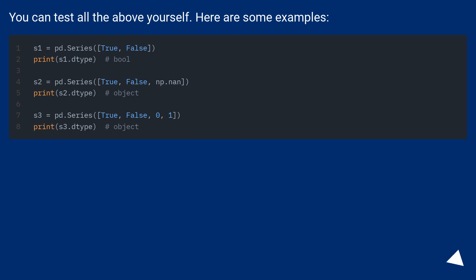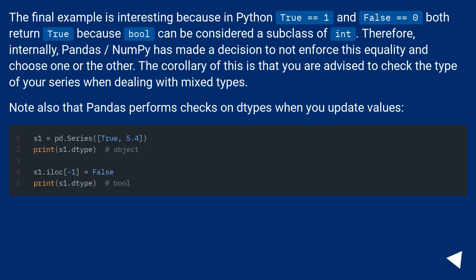You can test all the above yourself — here are some examples. The final example is interesting because in Python, True == 1 and False == 0 both return True, because boolean can be considered a subclass of int. Therefore, internally, pandas and numpy have made a decision to not enforce this equality and choose one or the other.